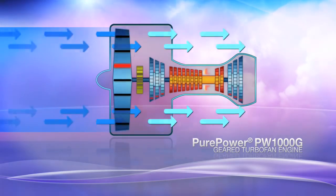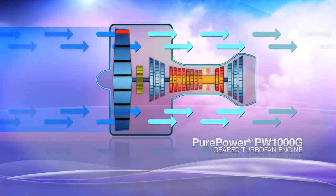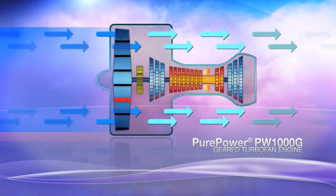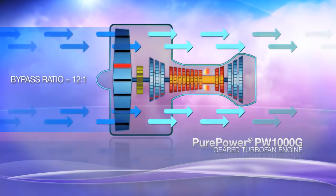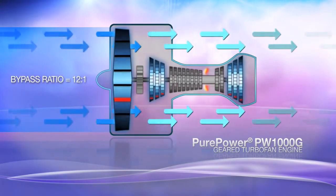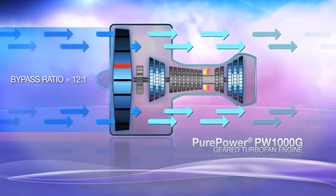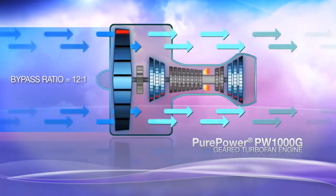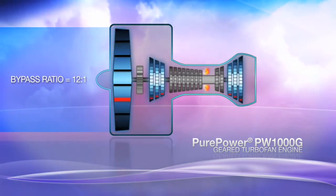The fan runs more slowly, delivering more thrust from less work for an impressive bypass ratio of 12 to 1. The low pressure compressor and low pressure turbine rotate faster than the fan, achieving top performance with fewer stages and fewer parts.